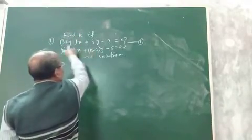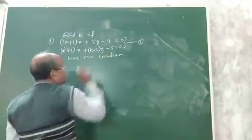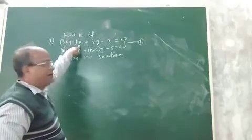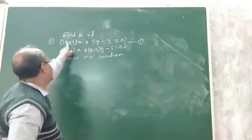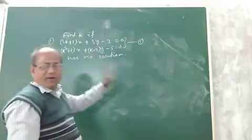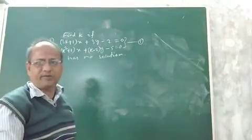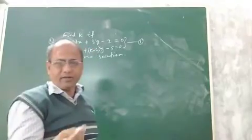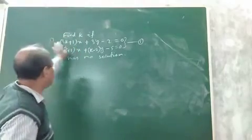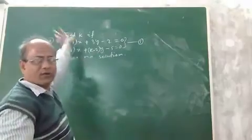Suppose you are given a pair of linear equations in two variables — this is one equation, this is another equation. In this equation, the coefficient of x is 3k plus 1. We do not know the value of k; k is some constant. Now find the value of k, given the condition that the system has no solution. The system may have infinitely many solutions, no solution, or a unique solution. We are given it has no solution — what will be the value of k?